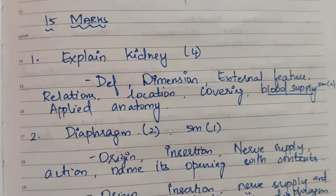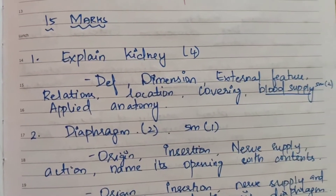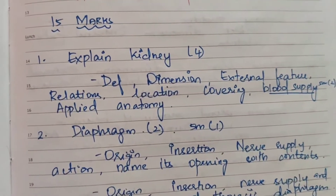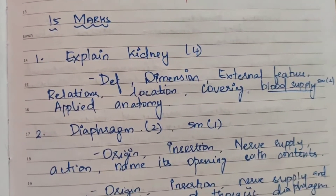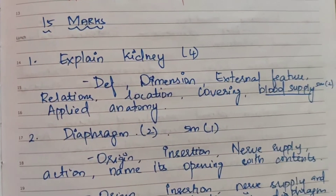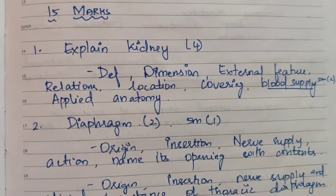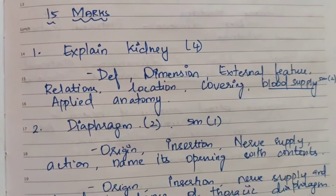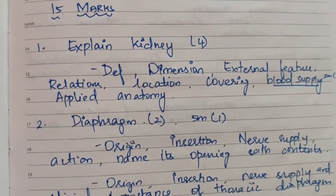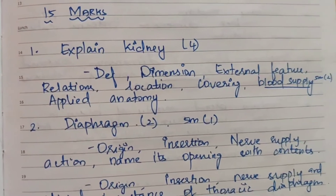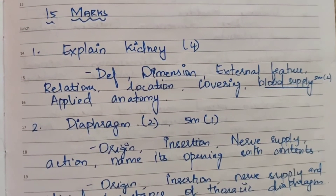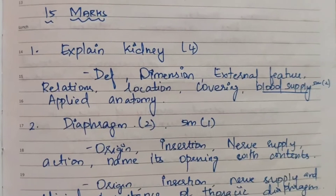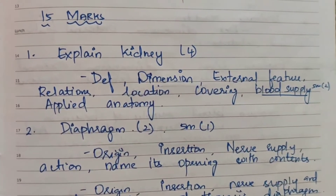First 15-mark topic: Explain the kidney. The kidney topic has appeared 4 times in 15-mark questions. Subtopics include definition, dimension, external features, relation, location, covering, blood supply, and anatomy. Blood supply of the kidney is also a key subtopic.